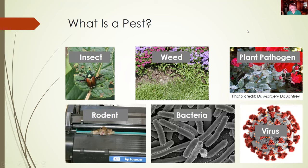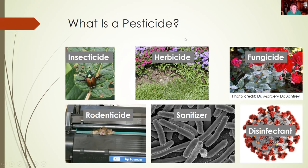Any given pesticide is designed to control certain pests. So before you go out and buy one, you have to make sure you positively identify the pest. Here are the different types of pesticides we often use — even the sanitizers and disinfectants we used this past year are pesticides. So you have to identify the target pest to make sure the pesticide will work.